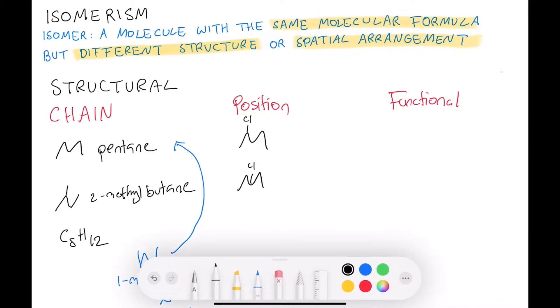So we can have 2-chloropentane or we can have 3-chloropentane. But similar to the chain one, if you draw a structural isomerism like that...